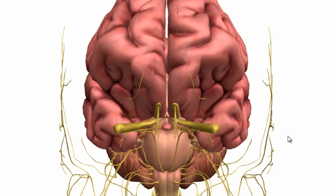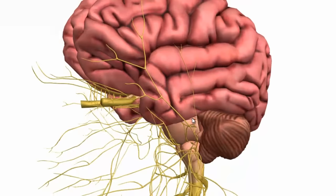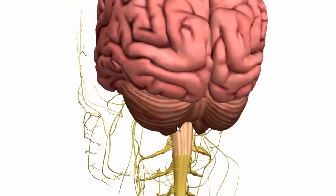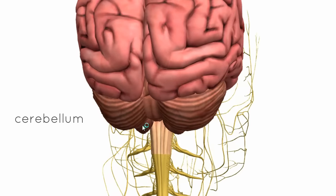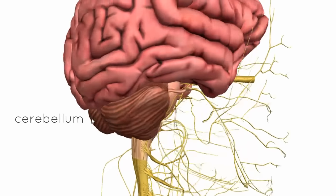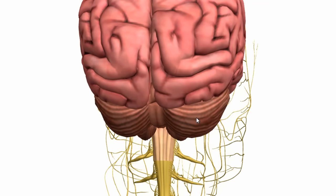The cerebellum is the part of the brain that sits behind the brainstem. You can see it here sitting directly behind the brainstem, and it has two lobes. The word cerebellum means 'little brain' in Latin. It has loads of connections with the brainstem and is important in motor control and coordination, balance, and muscle tone.